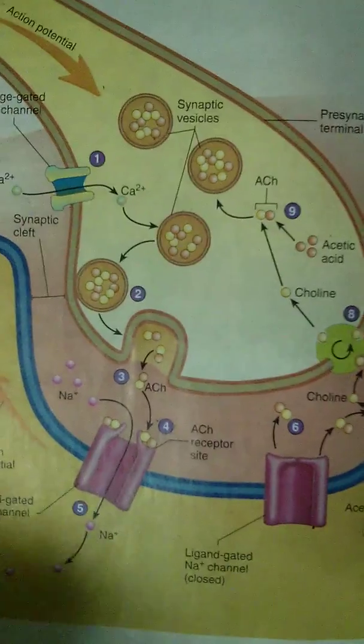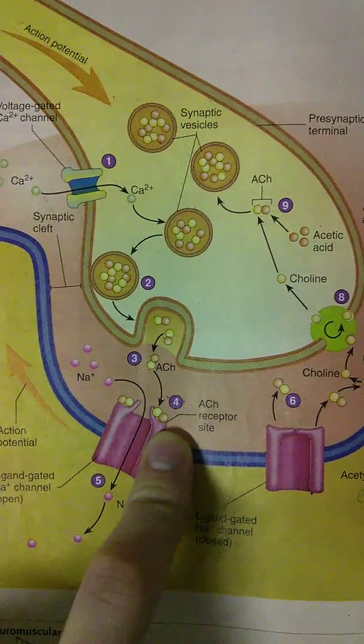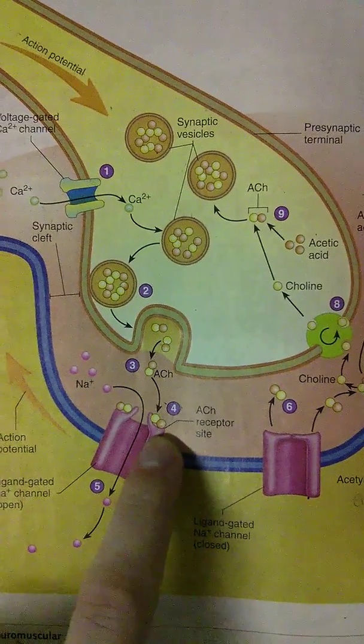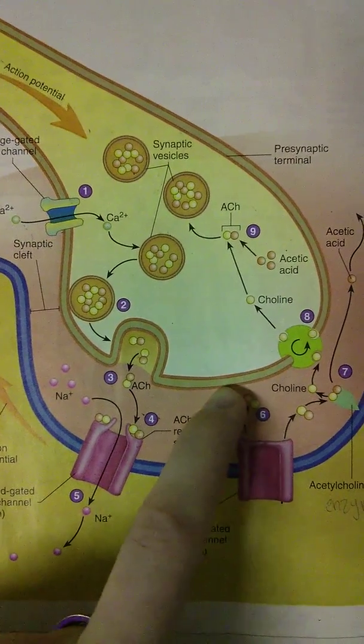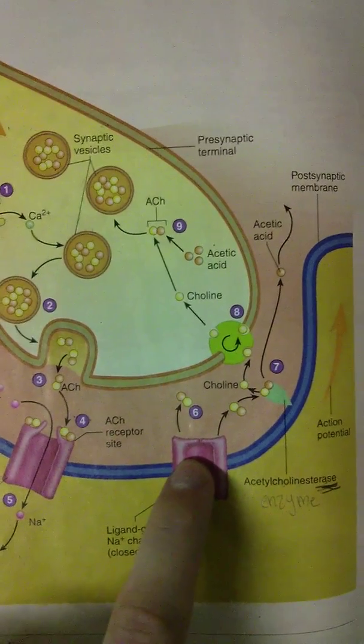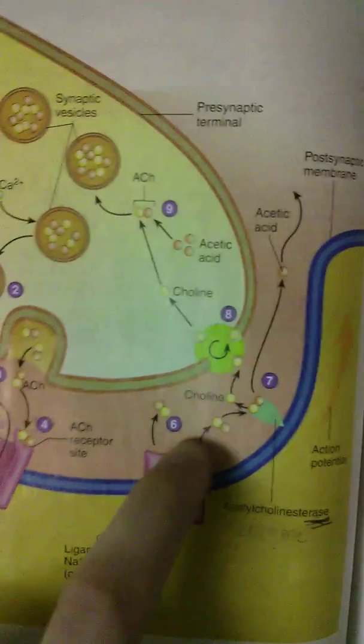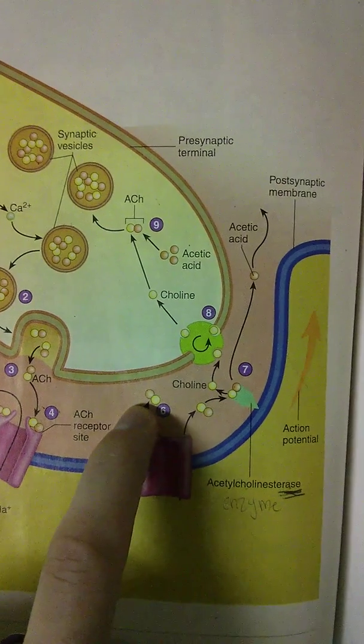Now, after enough sodium has rushed in, ACH now no longer has any more purpose in holding open the channel. So the acetylcholine is going to let go and release from the channel so that the channel is going to close because it is not being stimulated anymore to stay open. So now we have acetylcholine just kind of chilling out in the synaptic cleft, and it doesn't need to be there.